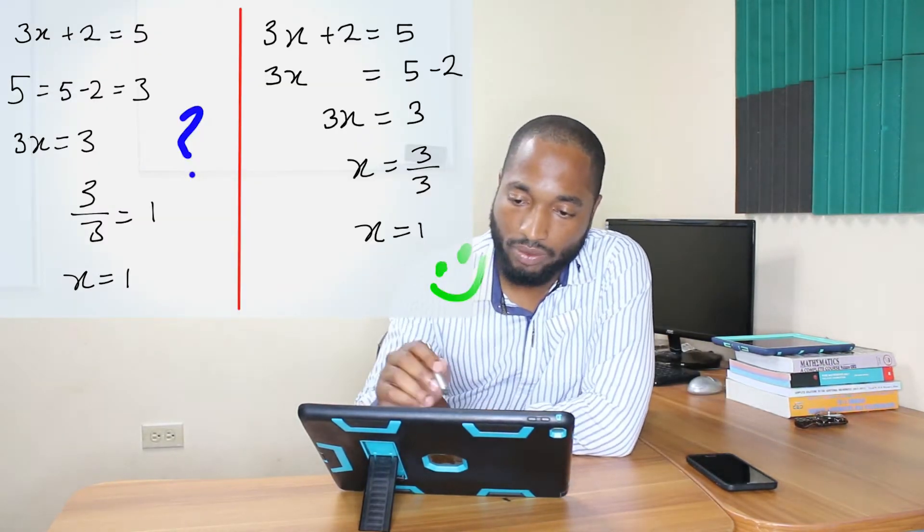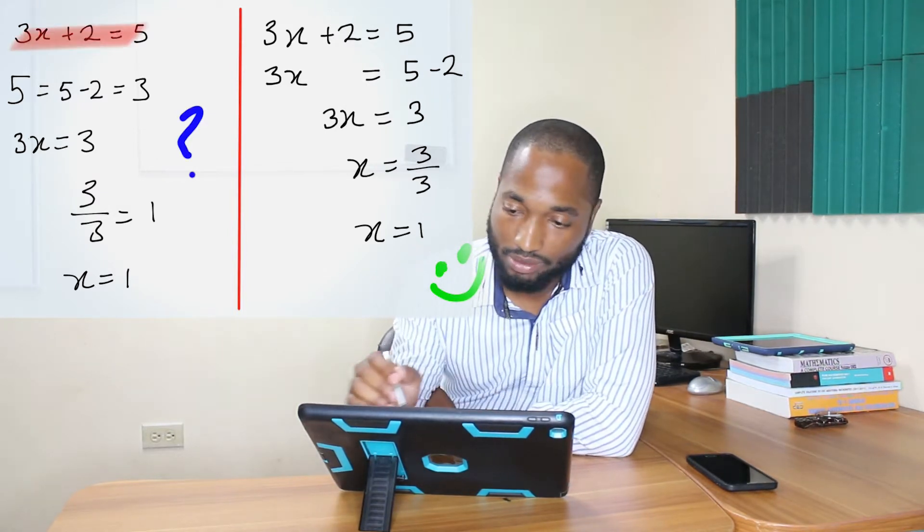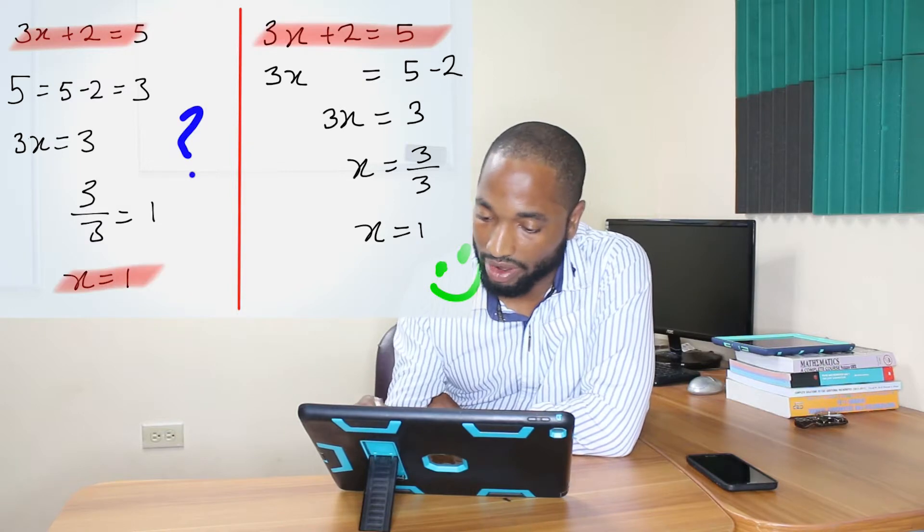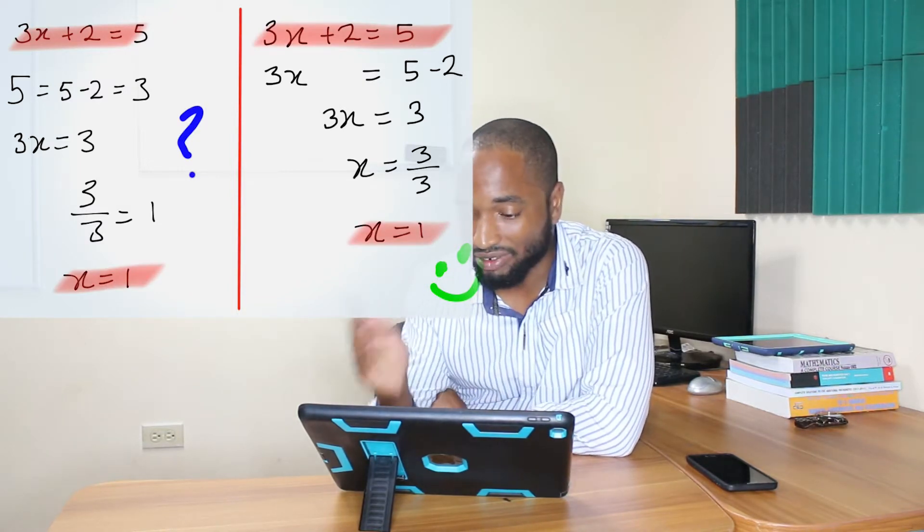All right, I just want to make a quick video on something you can do to get your math teacher angry. Don't do this. Take a look at these two questions here. We have the left-hand side and we have the right-hand side. They both solve the same thing, they both arrive at the same answer, but what is different from the left-hand side to the right-hand side?